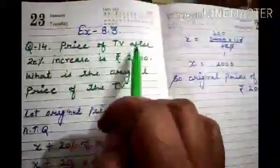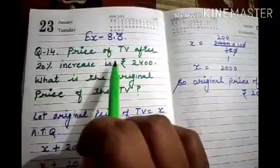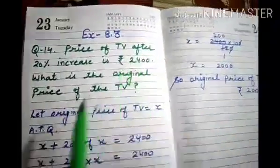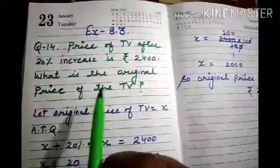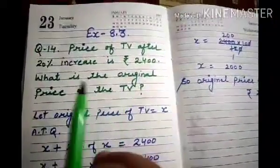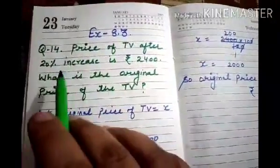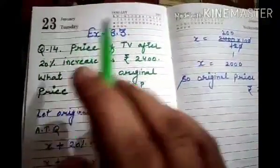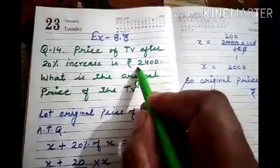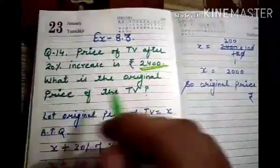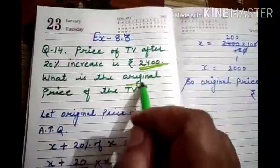Exercise 8.3, Question number 14. The price of a TV after a 20% increase is Rs. 2400. What is the original price of the TV?